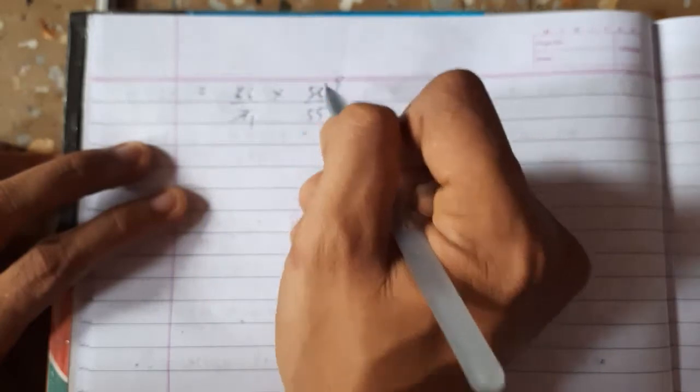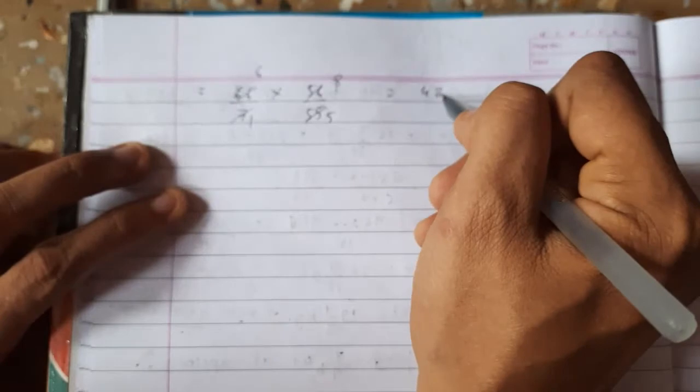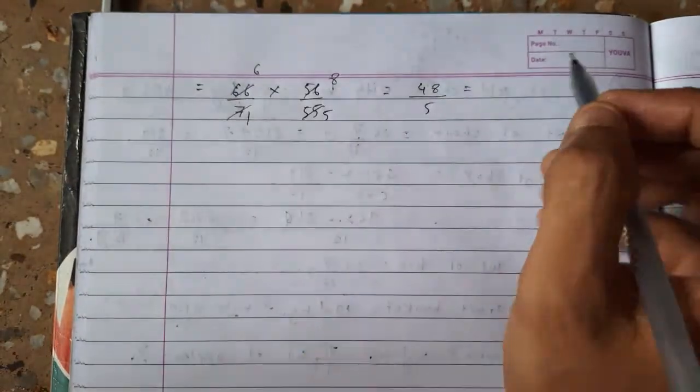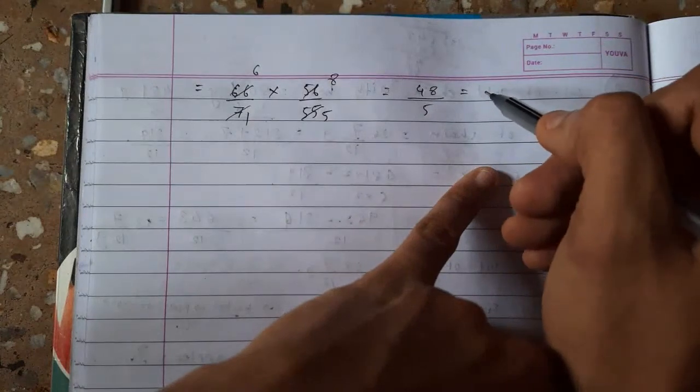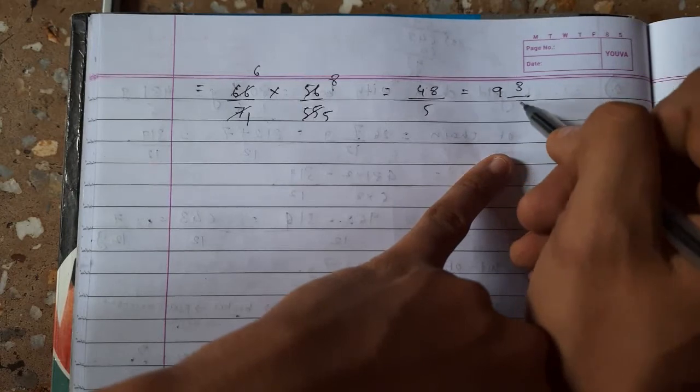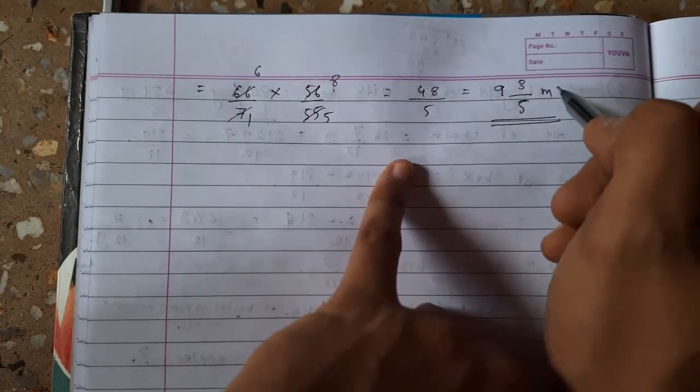Length is 66 upon 7 meters into 56 upon 55 meters. Very simple question they have asked us. 7 ones are 7, 8s are 11, 6s are 11, 5s are... 8, 6s are 48 upon 5. You can write this in mixed form. 5 nines are 45, 3 upon 5 meters square.